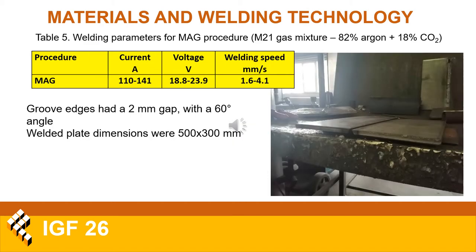As for the welding procedure, metal arc gas welding was selected due to its simplicity and efficiency, as well as the fact that the parent material in question has good weldability and does not have any additional requirements. Welding parameters can be seen in the table, and the slide also shows the geometry of the welded plate and the groove.